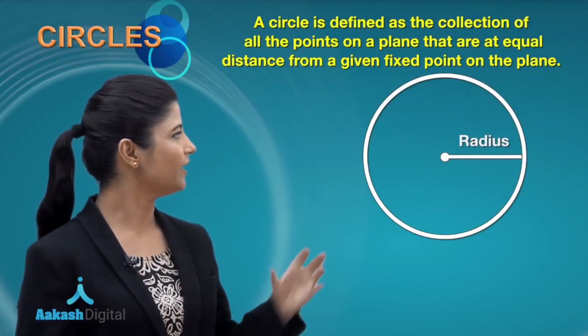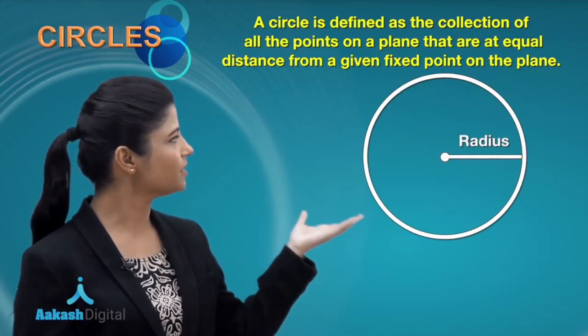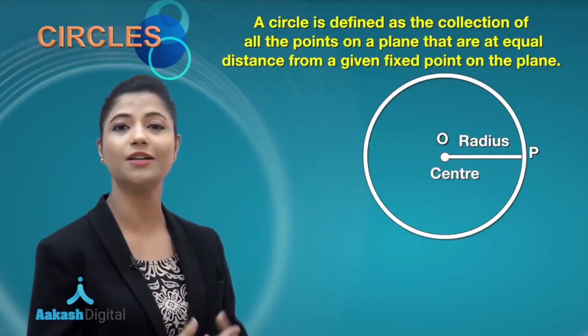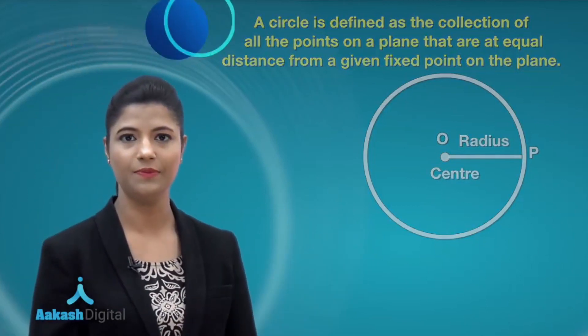In this figure, O is the center and OP is the radius of this circle.